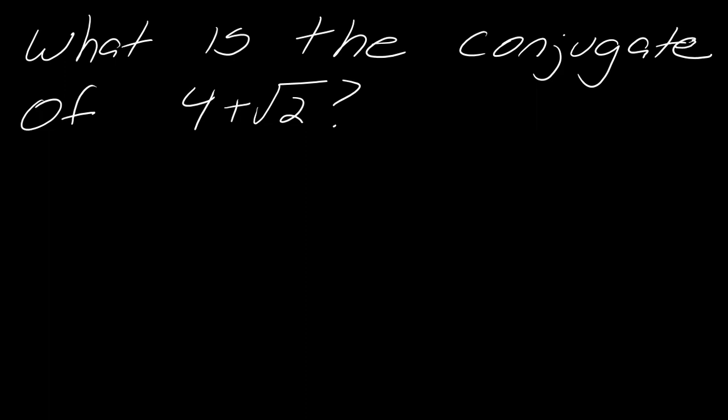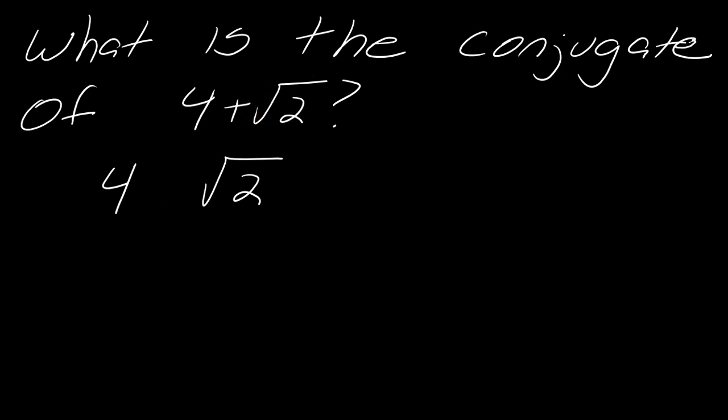I think it's easiest to explain the conjugate with an example. If I were to ask you what's the conjugate of 4 plus the square root of 2 — the conjugate is found by taking whatever sign is in between and writing the opposite. So the conjugate of 4 plus the square root of 2 will be 4 minus the square root of 2.